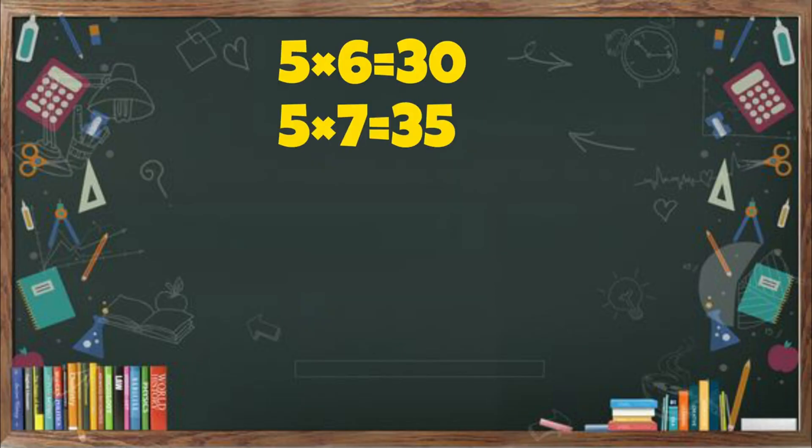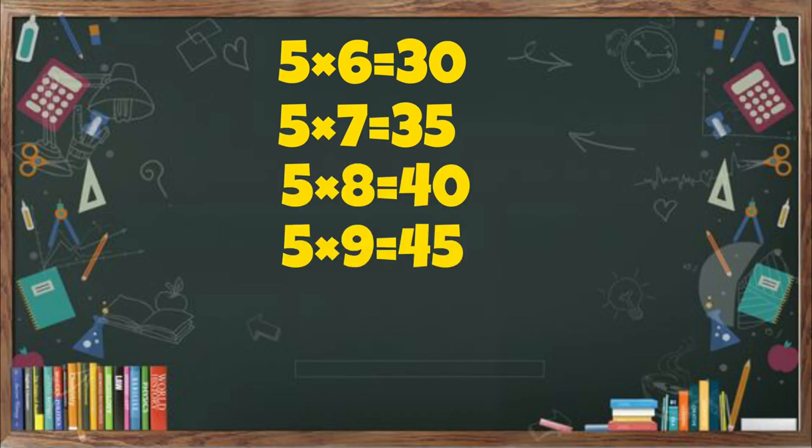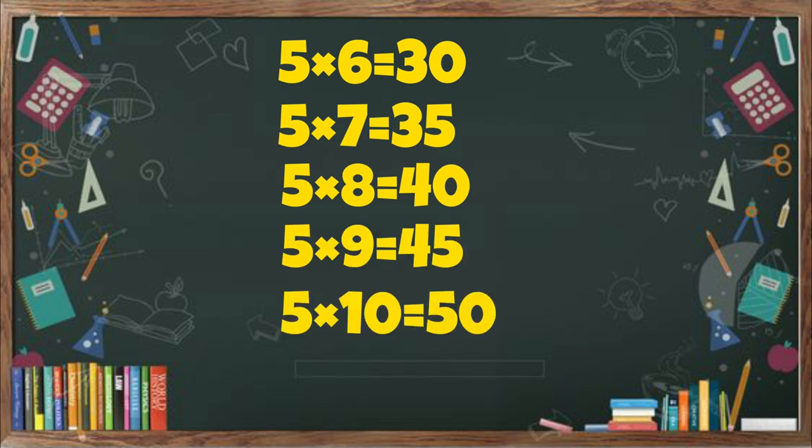5 7s are 35. 5 8s are 40. 5 9s are 45. 5 10s are 50.